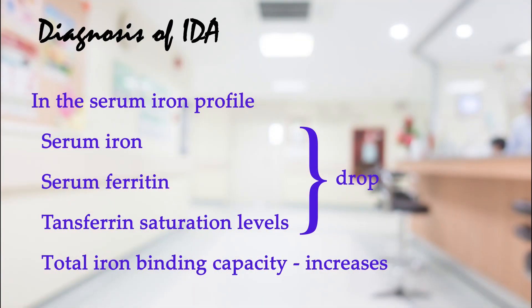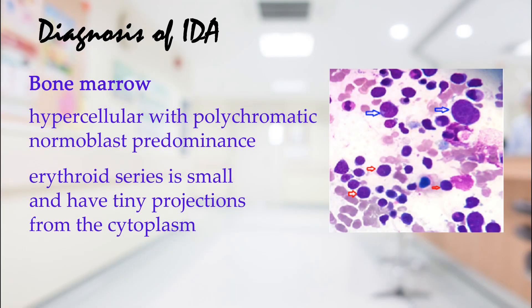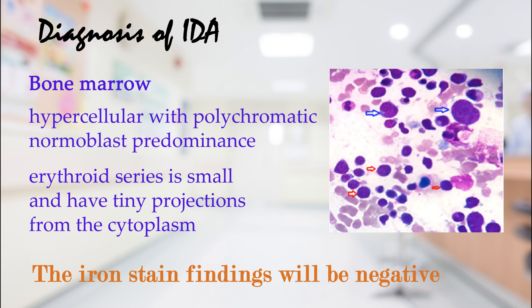In the serum iron profile, serum iron, serum ferritin, and transferrin saturation levels drop, while total iron binding capacity increases. Bone marrow will be hypercellular with polychromatic normoblast predominance; the erythroid series is small and has tiny projections from the cytoplasm, and the iron stain findings will be negative.